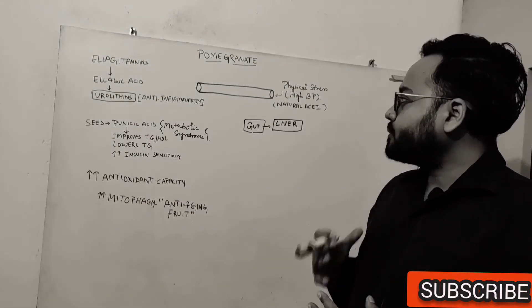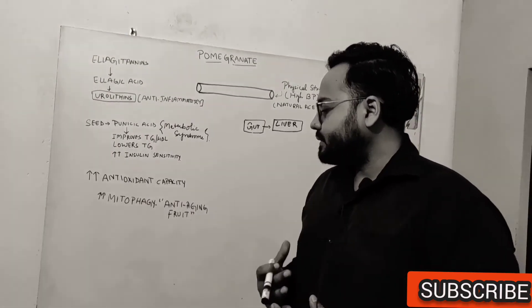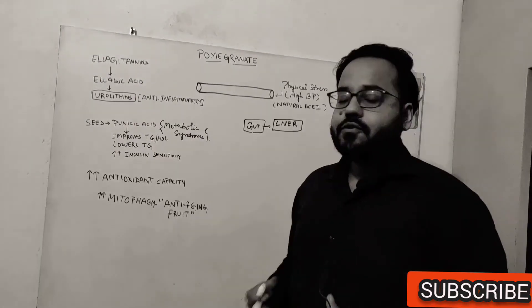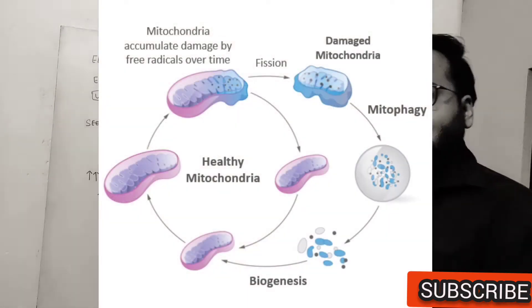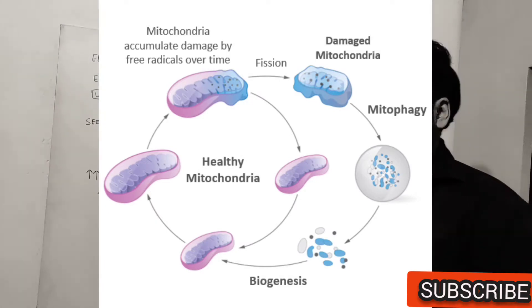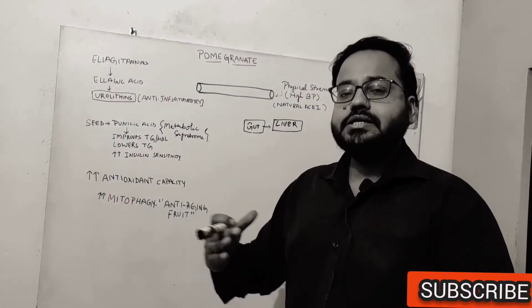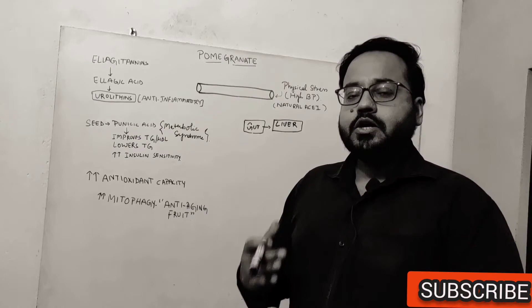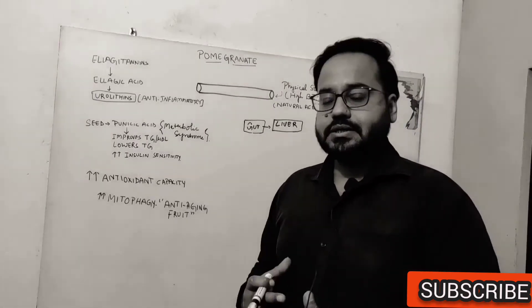Now what you should also be knowing is that pomegranate is also excellent for enhancing mitophagy. Mitophagy means it increases the clearance of the defective mitochondria. So one of the hypotheses given for aging is that as you age your mitochondrial function declines. Mitochondria, we know, are the powerhouse of your cells. They generate energy.